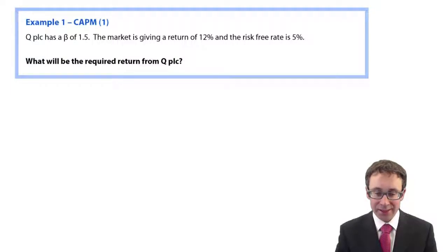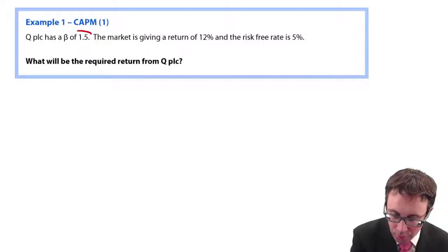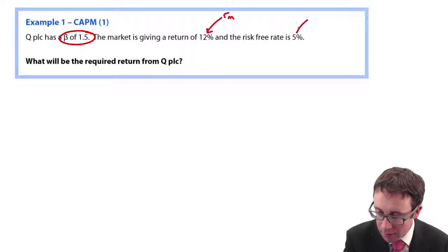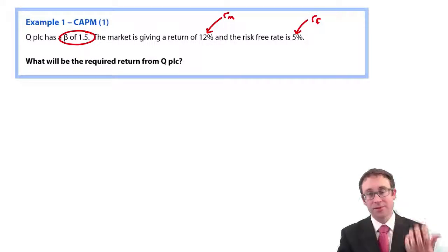Example number one says what would be the required return from Q plc? You've got the beta is equal to 1.5. The market is given a return of 12 percent, so that's RM. The risk free rate is there as 5 percent.